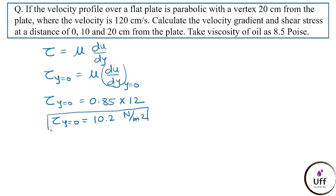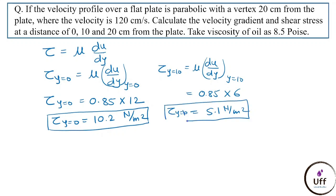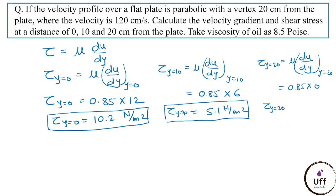At y = 10 cm: τ = μ × (du/dy) = 0.85 × 6 = 5.1 N/m². At y = 20 cm: τ = 0.85 × 0 = 0 N/m².